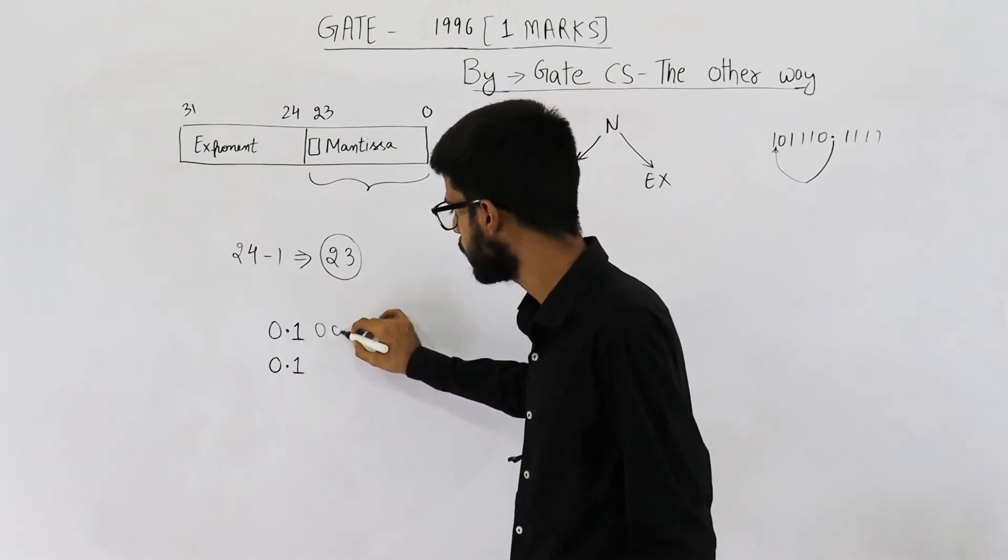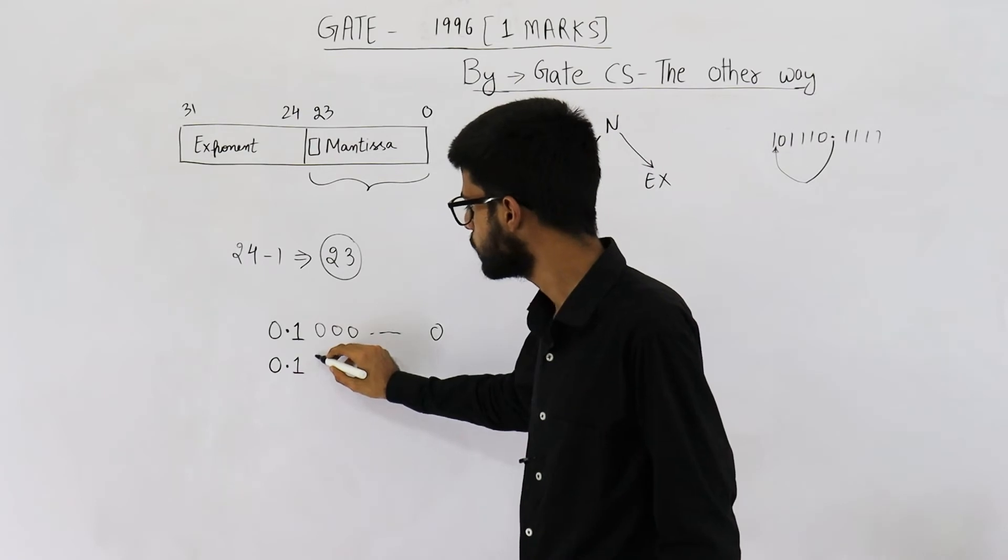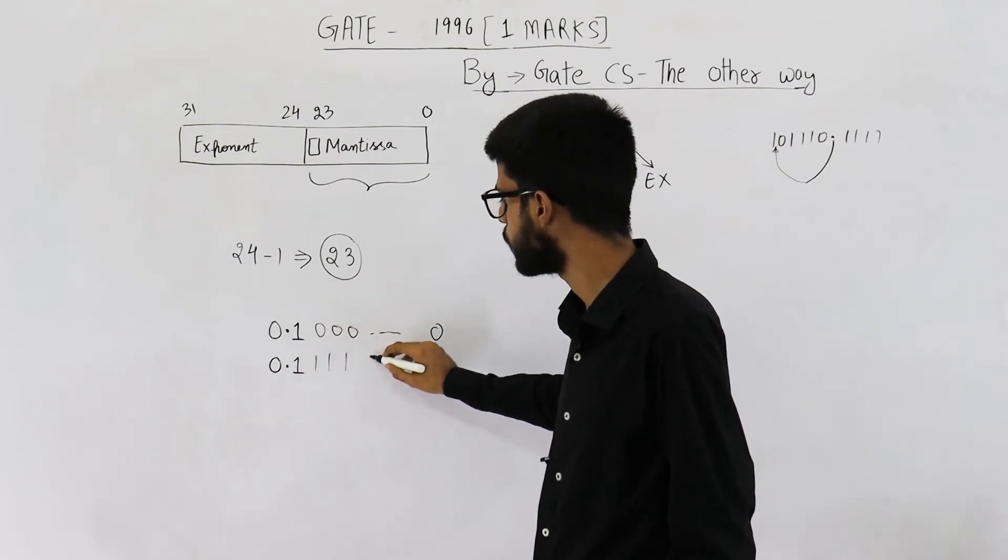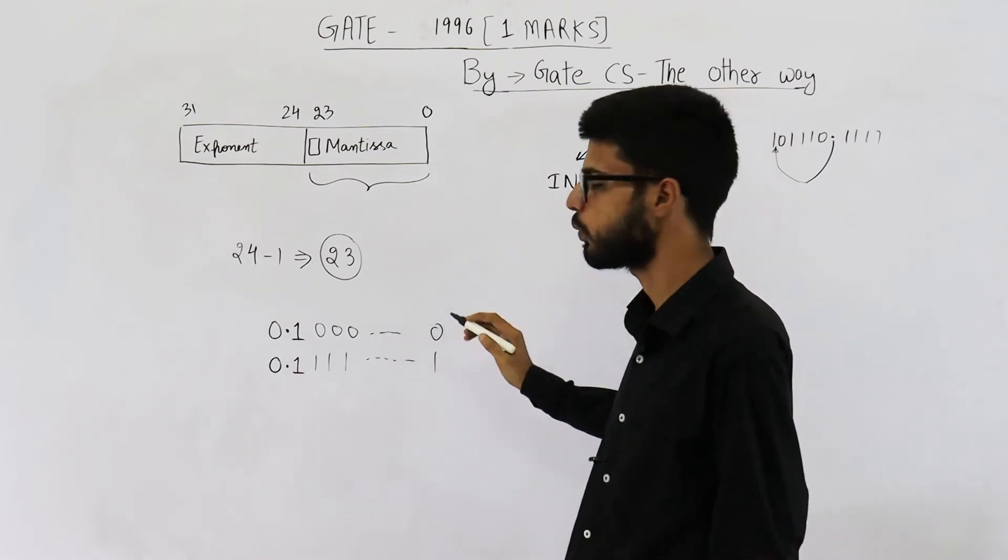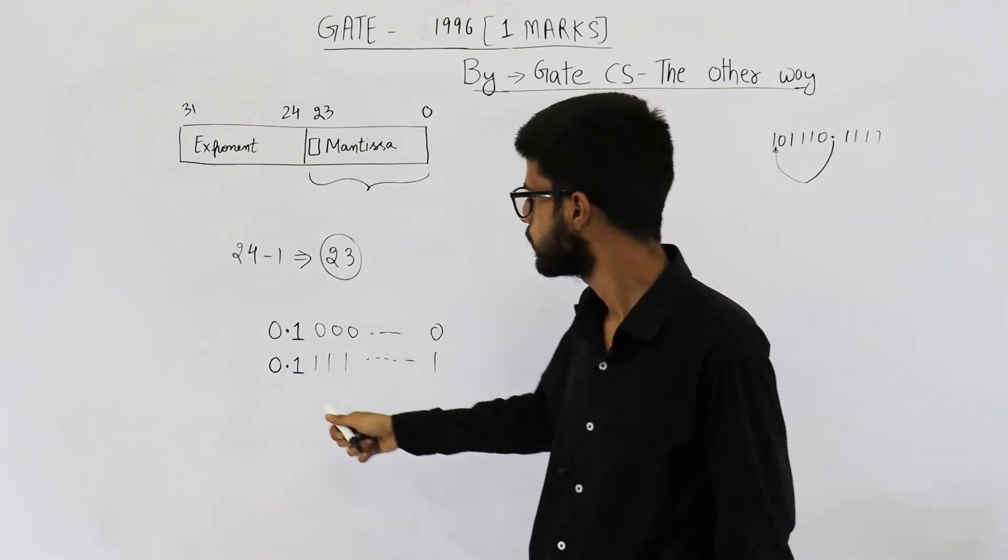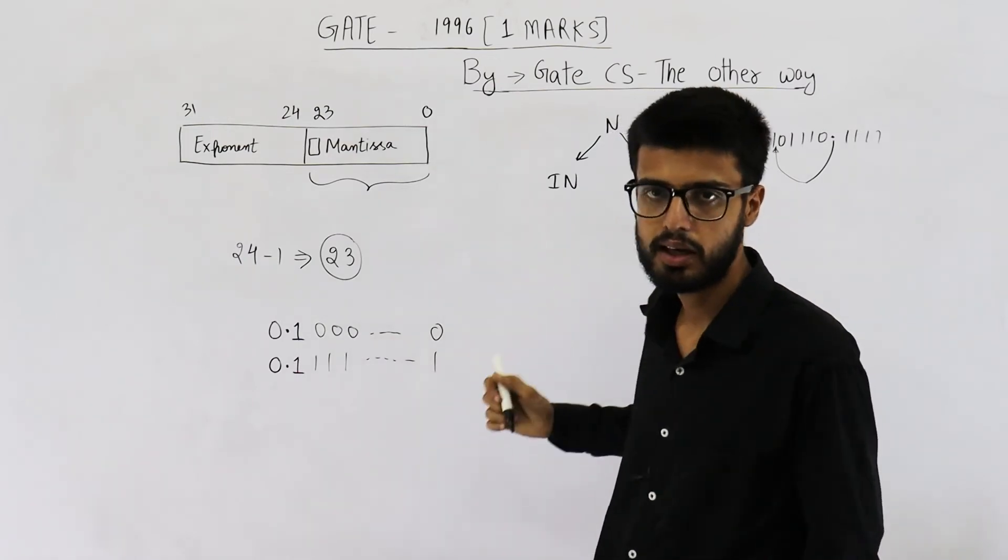For smallest number, take all of these bits as 0s. For largest number, make all of these bits 1s. That means, smallest number is 0.1. Largest number is 0.111111111, so on till the last bit.